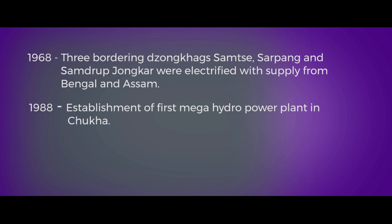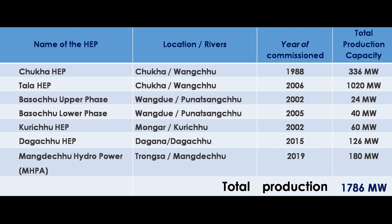Now let us look at the list of operational hydropower plants in the country. The Chuka hydropower plant is located on the Wangchu River, was commissioned in 1988, with a total production capacity of 336 megawatts. That is the first hydropower plant in the country.